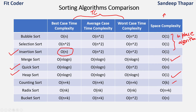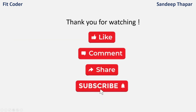In the coming videos we will see in-depth details on how all sorting algorithms work — how we arrive at average-case, best-case, worst-case, and space complexities. This slide can act as a cheat sheet for a quick glance at all sorting algorithms. That was the introduction to sorting algorithms; in coming videos we will cover each in detail. If you have any doubts or suggestions please leave them in the comment section. If you like the content please like, share, and subscribe. This is Sandeep Thapar signing off. Thank you.